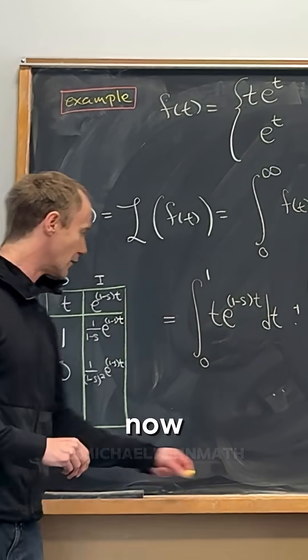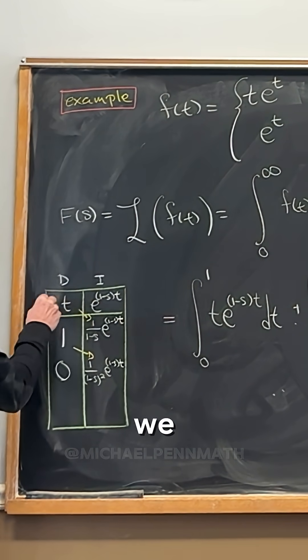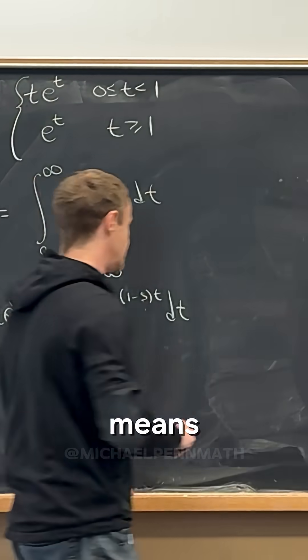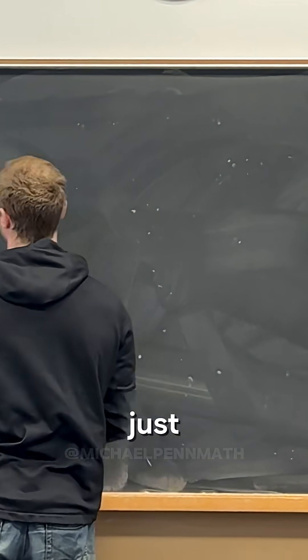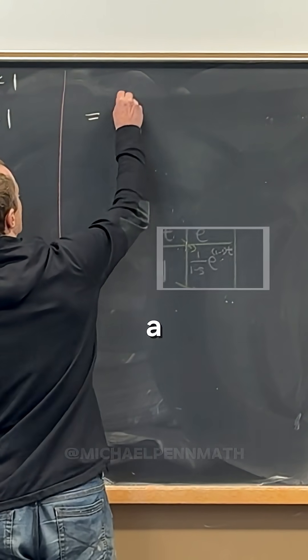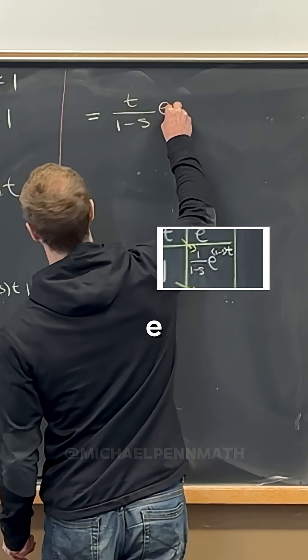We match on the diagonals and alternate the signs—that's our strategy for finding the antiderivative. So we can write down our antiderivative for the first part: t/(1-s) * e^((1-s)t) evaluated from t = 0 to 1.